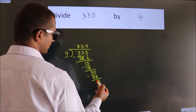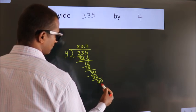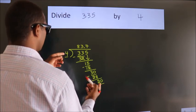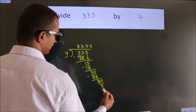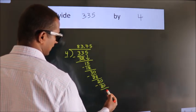After this, we already have the decimal, so directly take 0, giving us 20. When do we get 20 in the 4 table? 4 times 5 is 20. Now we subtract. We get 0.